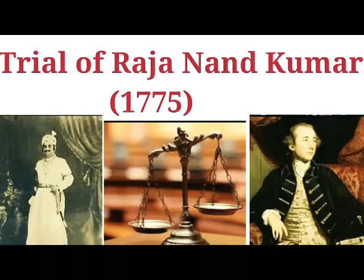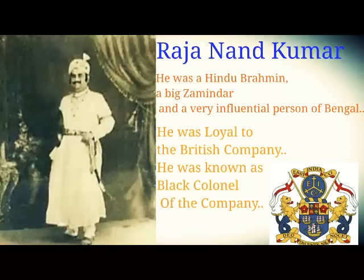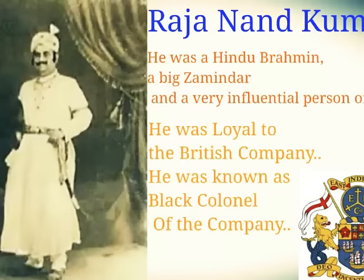First we will look at the background of this case. So there was a Raja — Raja Nandkumar — he was a Hindu Brahman. You can see in this photograph, that turban man is Raja Nandkumar. He was a big zamindar, a very influential person of Bengal, and he was loyal to the British Company — the East India Company. That's why he was also known as the 'Black Colonel' of the company.